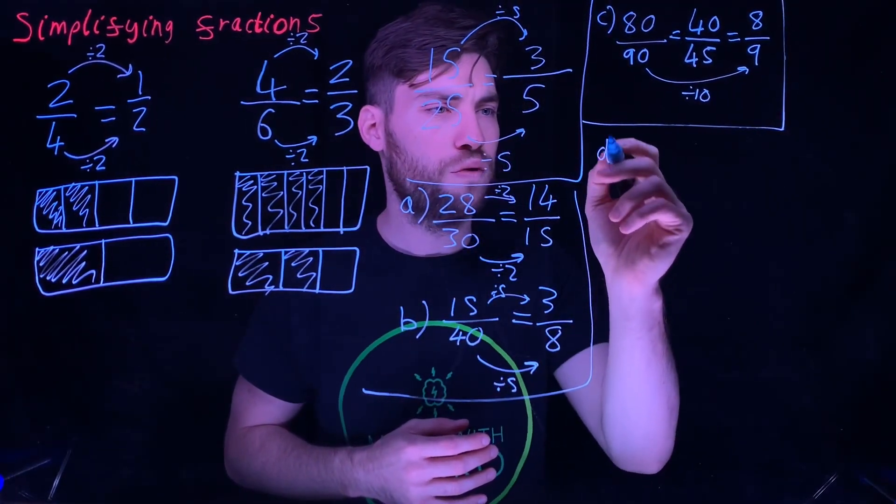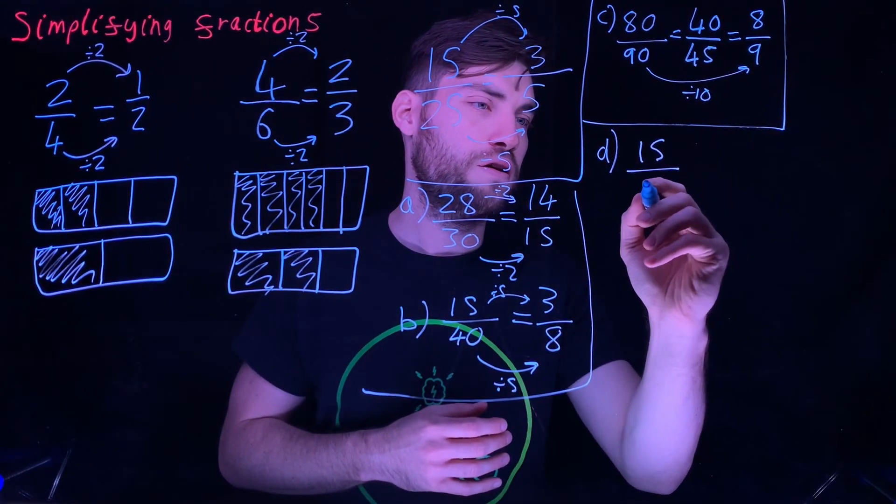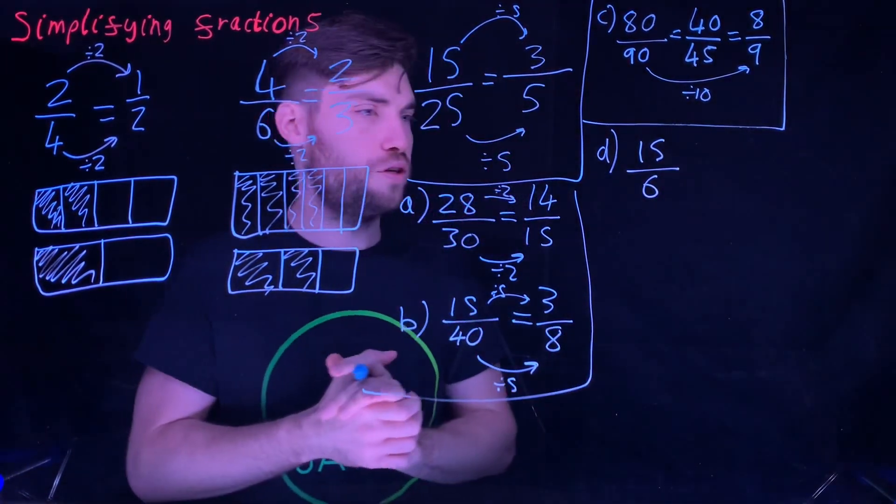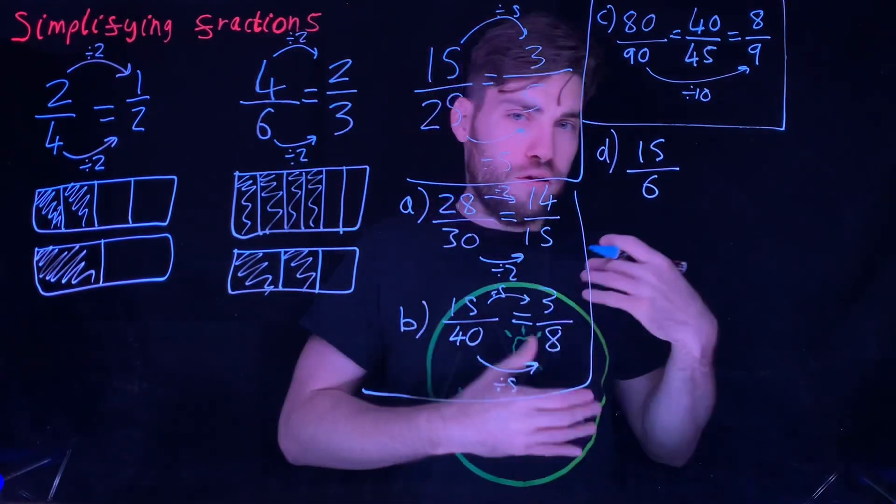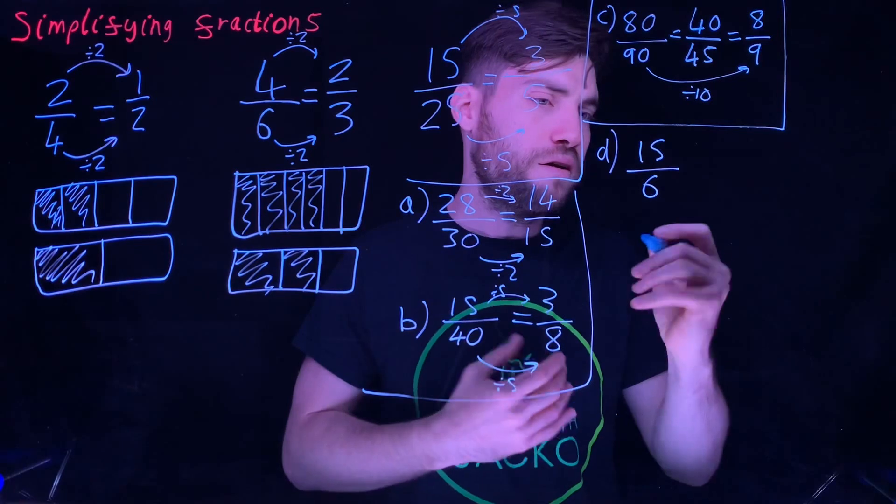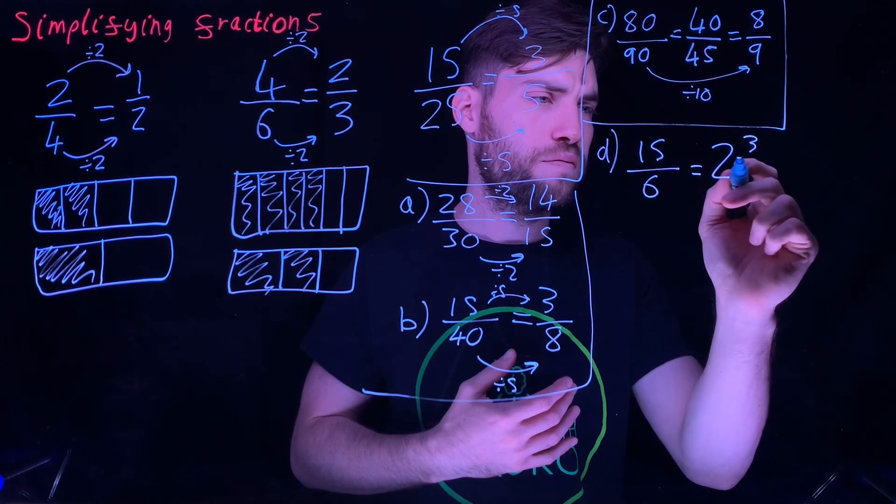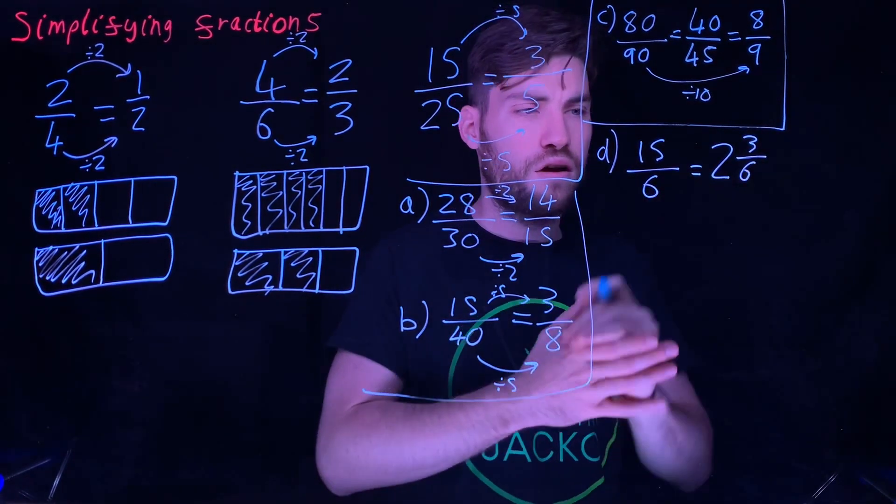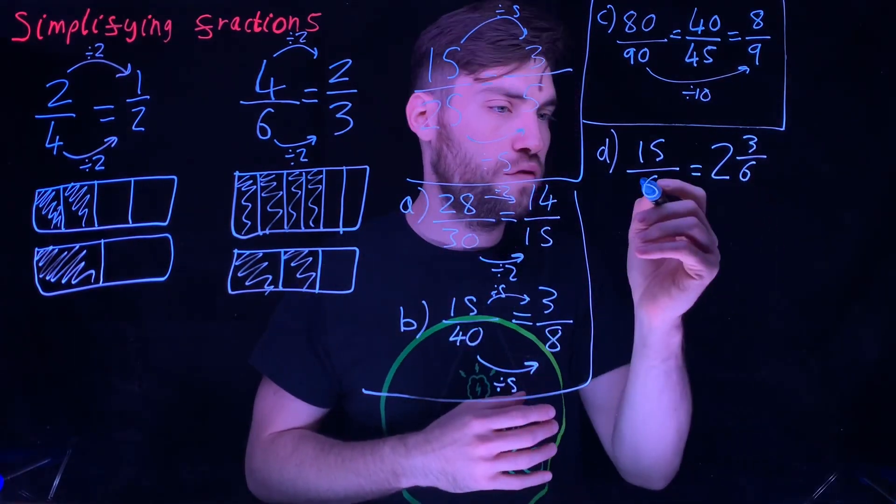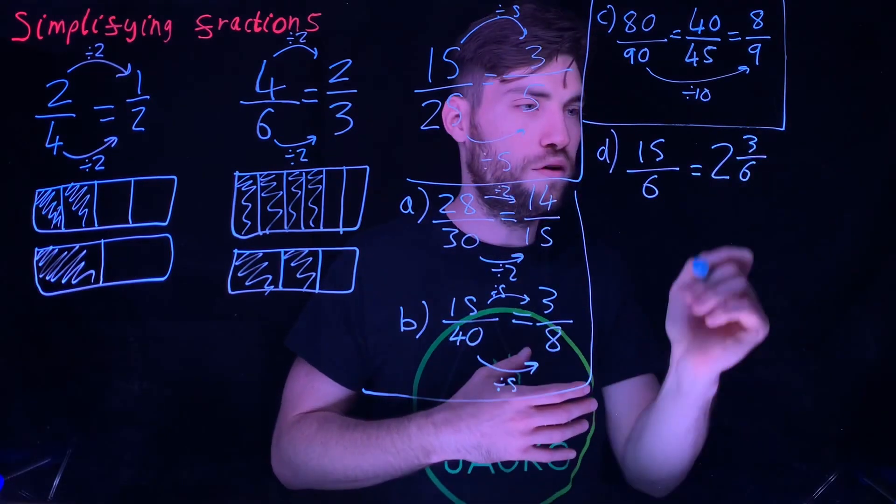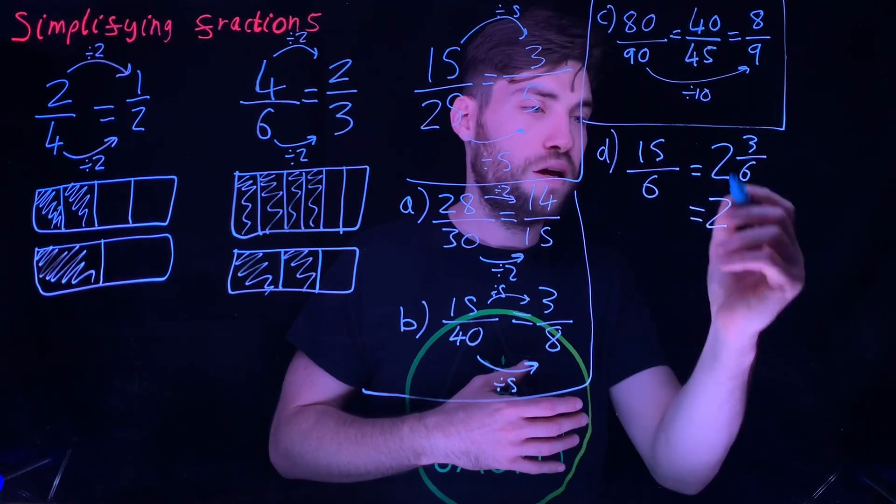Have a go at this one. Let's make it a bit more hard now. Let's go 15 over 6, an improper fraction. You can convert it first if you want to. You can go straight to a mixed number and go, well, that's 2 and 3 sixths. I've got a video on improper fractions and mixed numbers, so I'm not going to go fully into it. How many 6s go into 15? Two, and there's 3 left over. Then you can simplify that: 2 and 3 sixths is the same as a half.